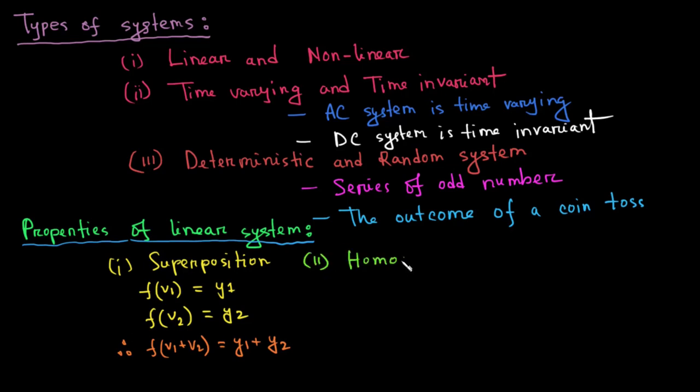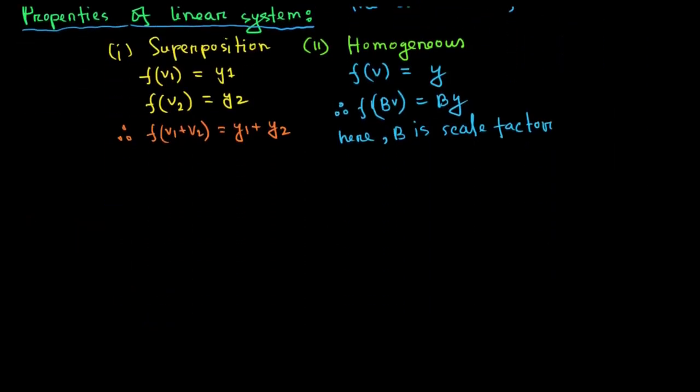According to homogeneous property, if the input, also called the excitation, is multiplied by a constant, then the output, also called the response, is also multiplied by the same constant. For example, if you multiply the input v by a scale factor b, the output y will also be multiplied by the same scale factor b.